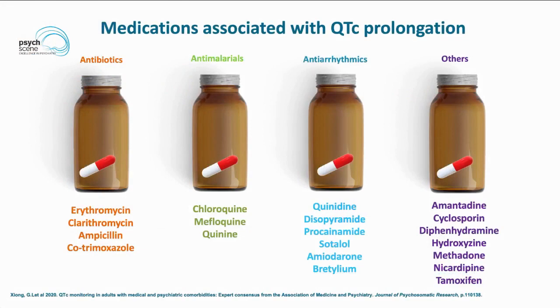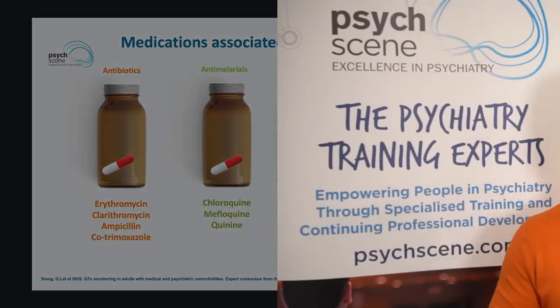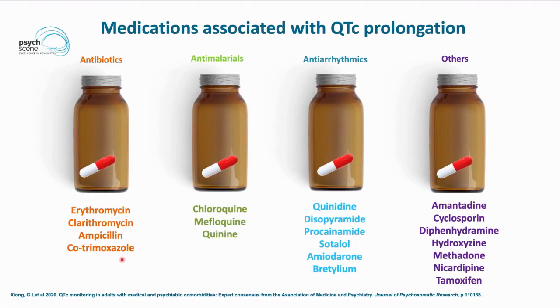We must also be mindful of non-psychiatric medications that can prolong the QTc interval. In psychiatric patients, medical comorbidities such as diabetes, hypertension, and infections may be present, so antibiotics such as erythromycin and clarithromycin need to be considered. Antimalarials — chloroquine, mefloquine, quinine — are associated with prolongation. Antiarrhythmics and other medications such as cyclosporine, amantadine, methadone, and tamoxifen are also relevant.